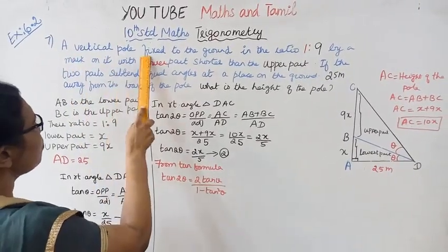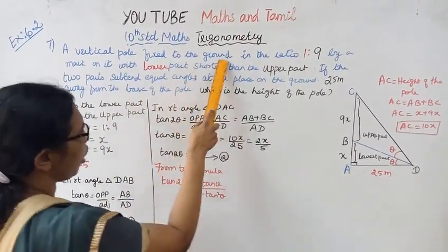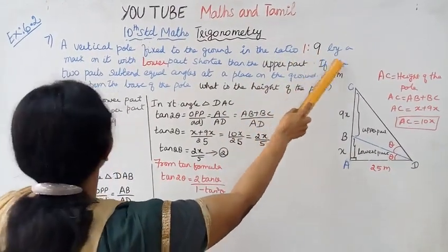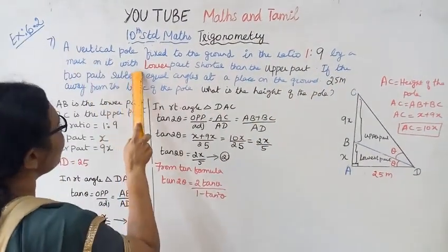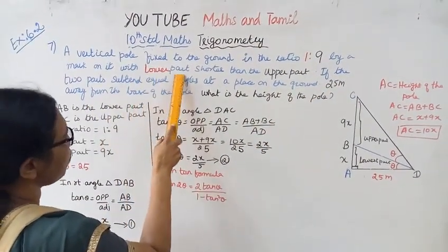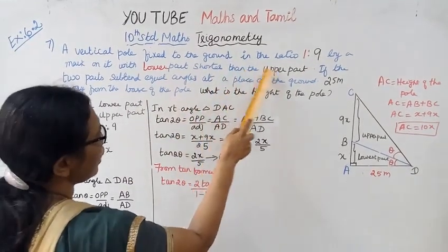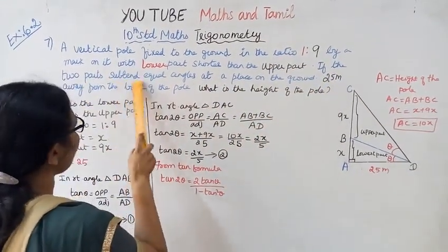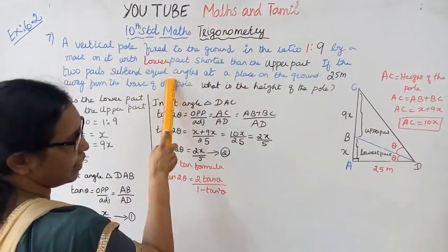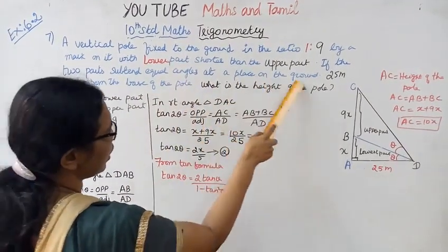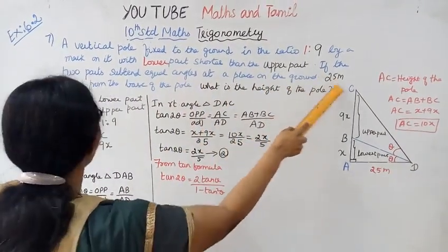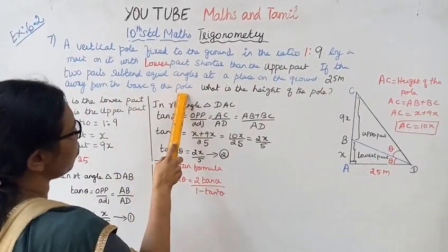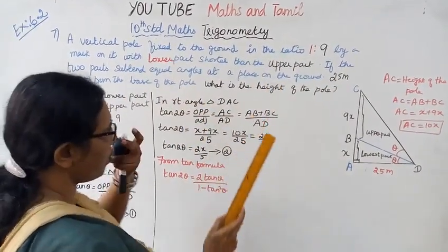A vertical pole fixed to the ground is divided by a mark on it in the ratio 1 is to 9, with the lower part shorter than the upper part. The two parts subtend equal angles at a place on the ground 25 meters away from the base of the pole. What is the height of the pole?